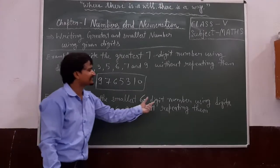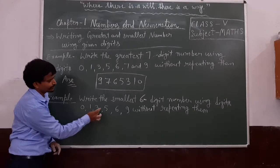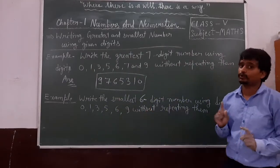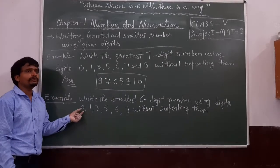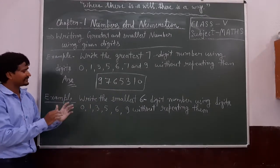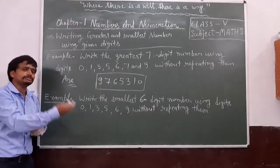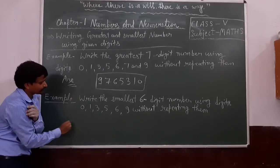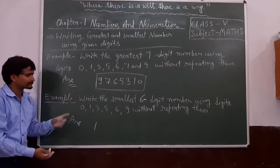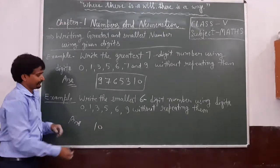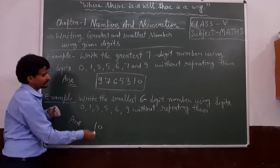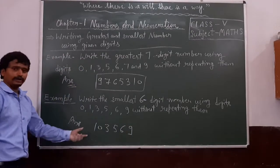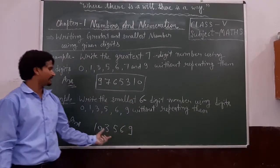Write the smallest 6-digit number using the given digits — 6 digits are given. You have to be very careful while writing the smallest 6-digit number. Never start with 0, because if you start with 0 the number becomes invalid. Always start with the digit greater than 0, which is 1. So start with 1, then put 0, then arrange the remaining digits in ascending order: 3, 5, 6, 9. This is the smallest 6-digit number.